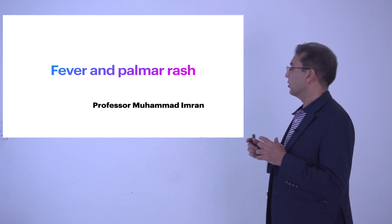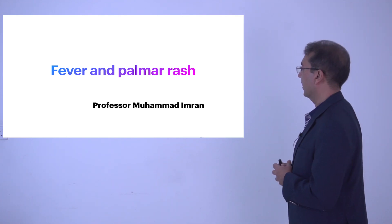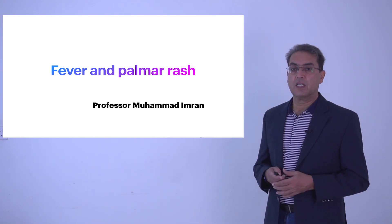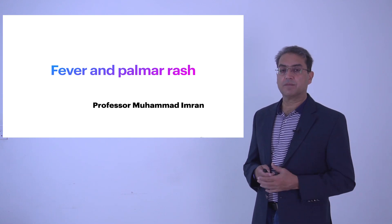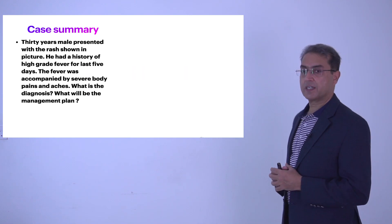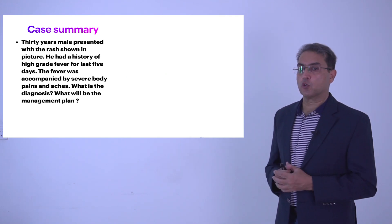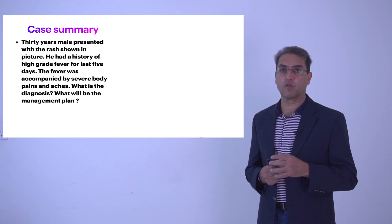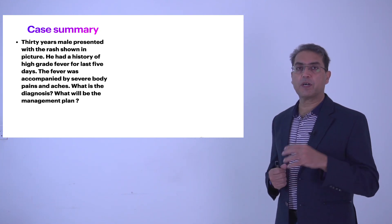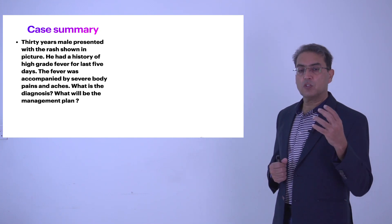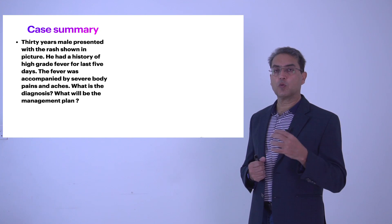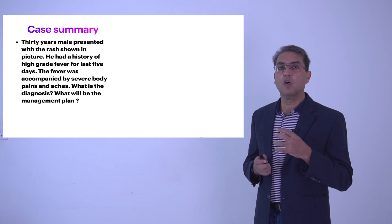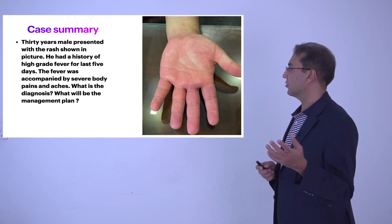Let's see a case of a patient who presented with fever and a palmar rash when the symptoms were resolving. The case summary: this was a 30-year-old male who presented with the rash shown in the picture. The patient had high grade fever for the last five days, accompanied by severe body pains and aches. There were no other lateralizing symptoms — only severe muscle aches, headache, and retro-orbital pain. What is the possible diagnosis and what is the treatment plan?